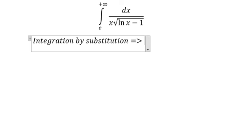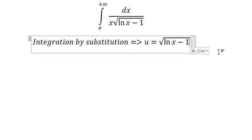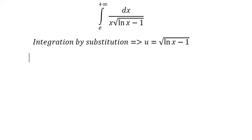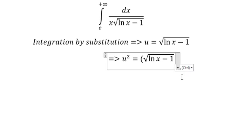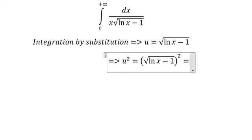Here we have u equals the square root of ln x minus 1. We square both sides and get u² equals ln x minus 1. Then we take the derivative of both sides, giving us 2u du equals dx over x.